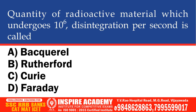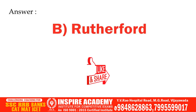Quantity of radioactive material which undergoes 10 to the power 6 disintegrations per second is called: Becquerel, Rutherford, Curie, or Faraday. And the correct answer is Rutherford.